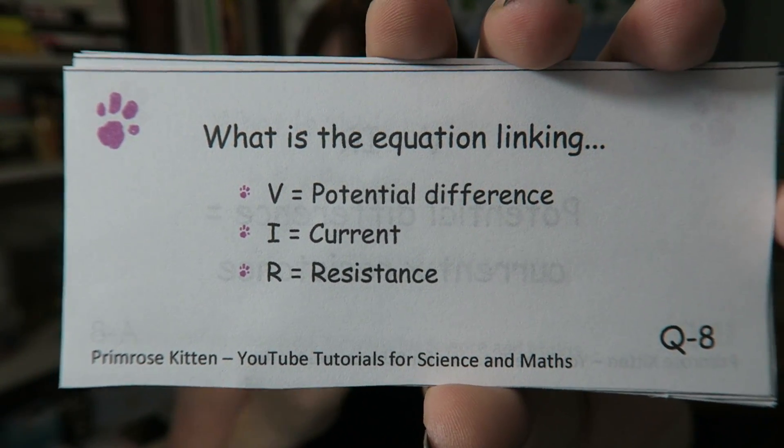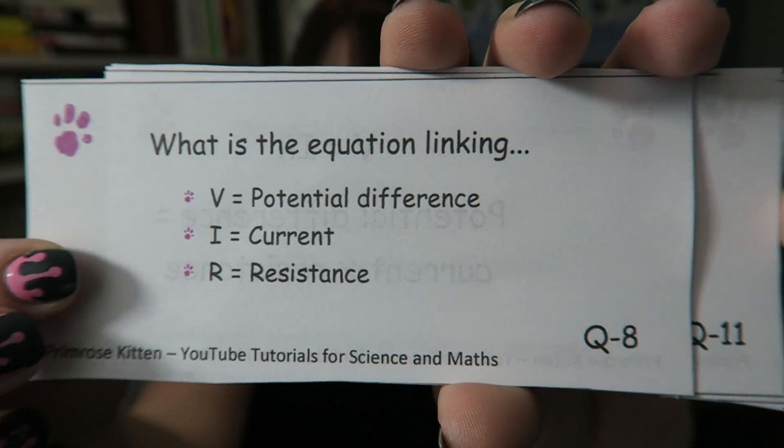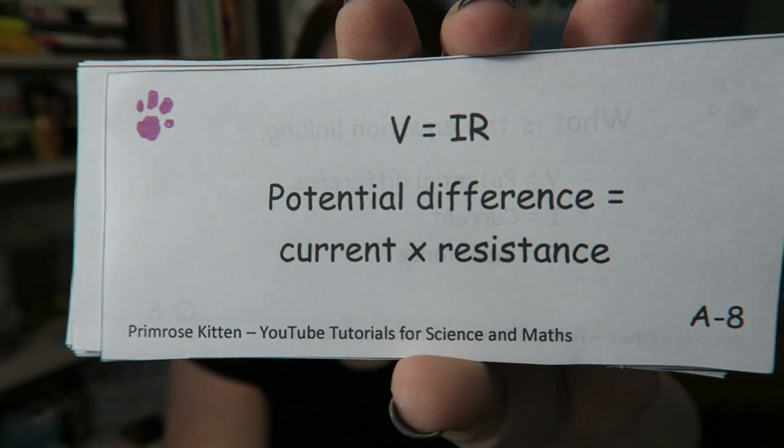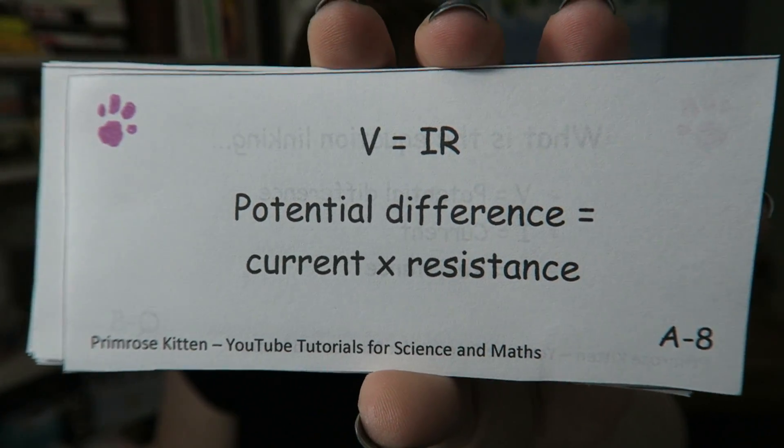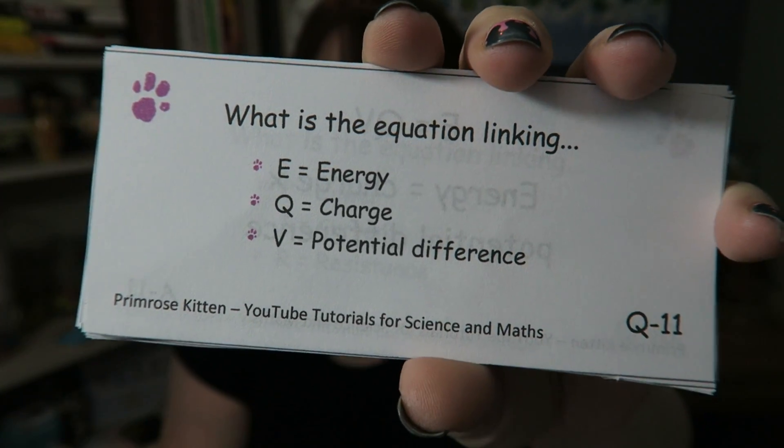What is the equation linking potential difference, current, and resistance? Potential difference equals current times resistance.